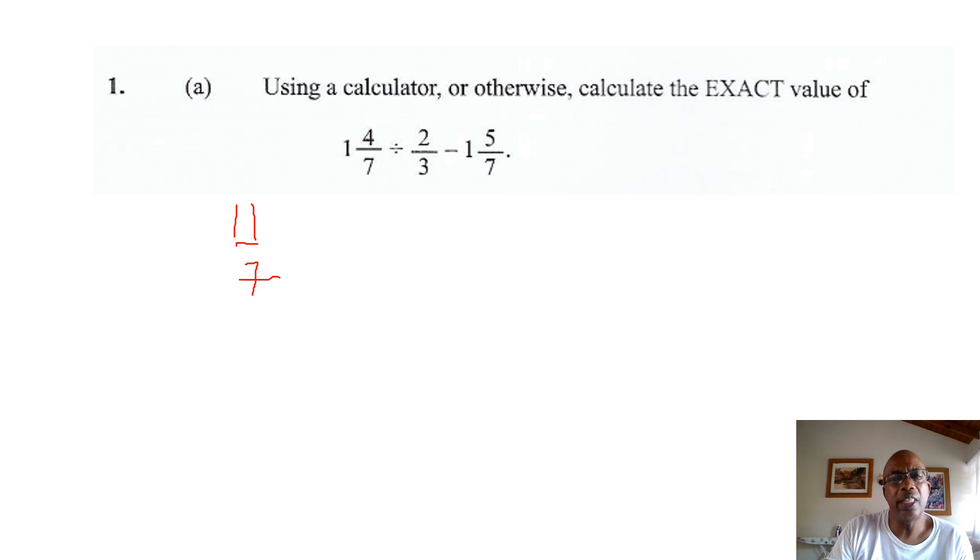So, this becomes multiply by 3 over 2. So, we have inverted the 2 thirds. So, it becomes 3 over 2.